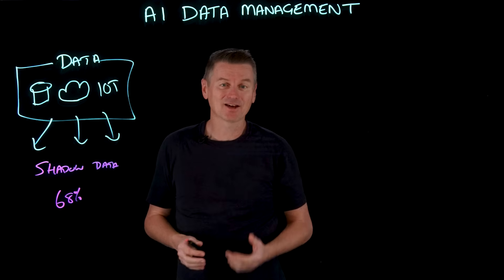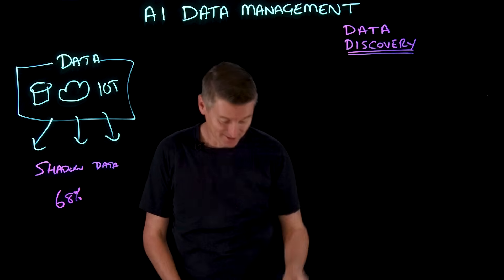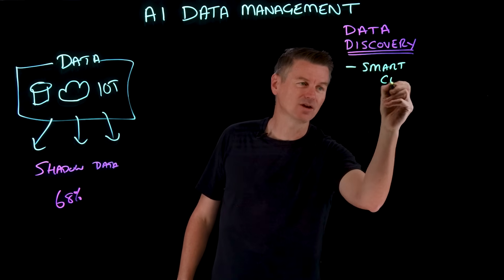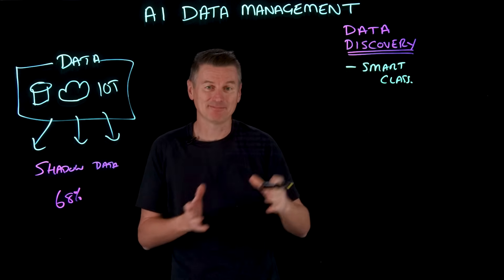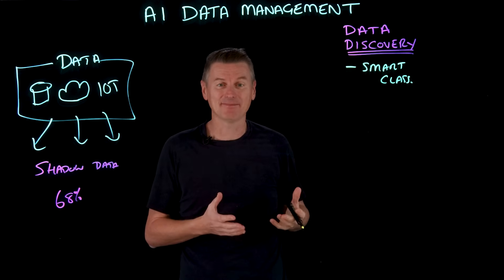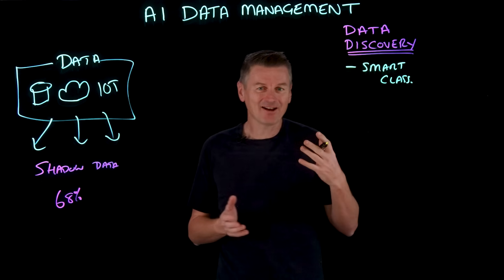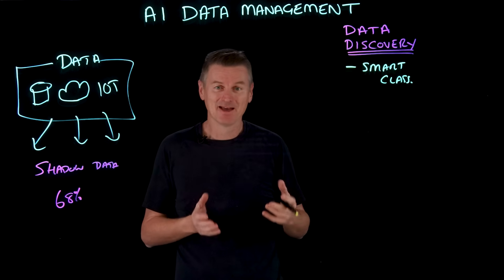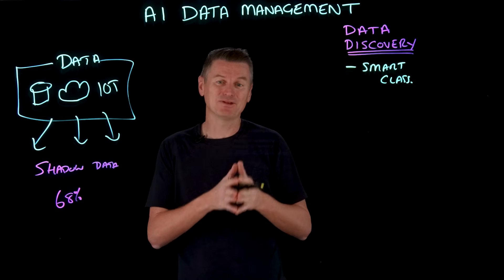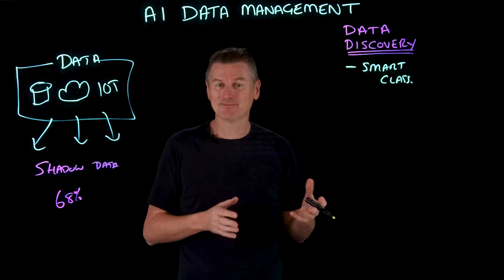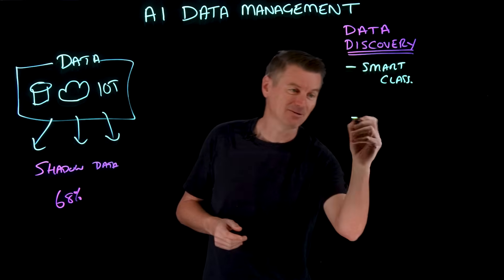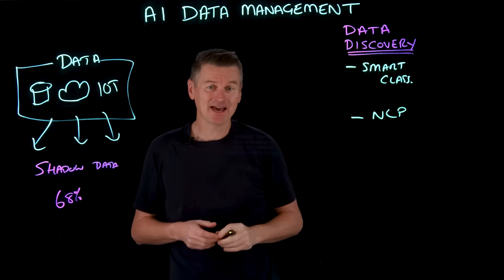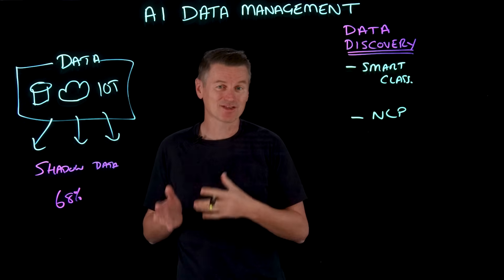AI can automate data discovery. One way is using something called smart classification. Machine learning algorithms can learn to classify data by content — for example, by analyzing the contents of a file, we can determine if a document is a contract, an invoice, or a resume. By automatically labeling the data with metadata, these tools make hidden data more visible and more searchable. NLP, or natural language processing, plays a part in smart classification, but it can also be used for processing unstructured text.